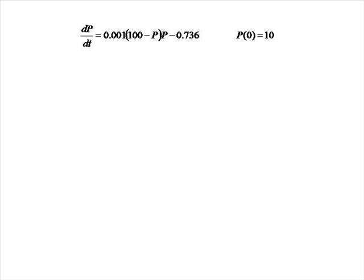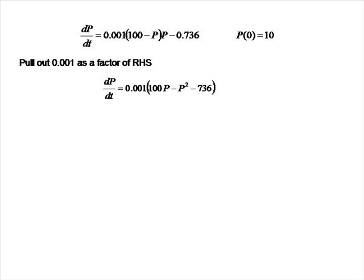To solve this differential equation, we're first going to pull out 0.001 as a factor from the right-hand side. When we do that we get dp/dt equals 0.001 times a quadratic in p squared. This differential equation is separable, so let's separate the variables and integrate.